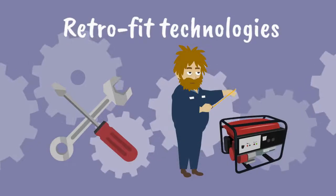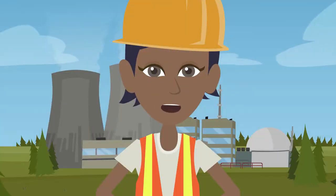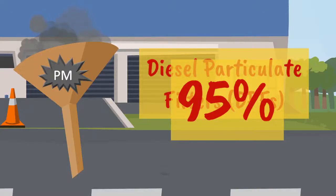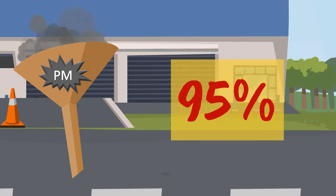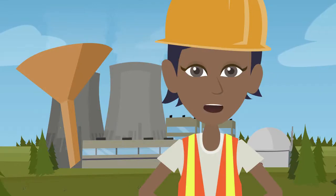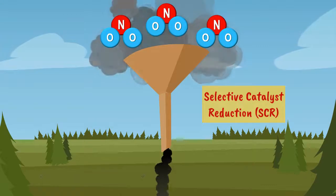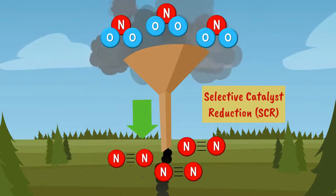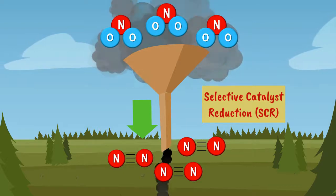Retrofit technologies are increasingly available for plant and construction machinery to reduce emissions. One commonly used technology is diesel particulate filters (DPFs), which, as the name implies, are filters that remove over 95% of fine particles from exhausts. It is important that technologies such as filters are maintained properly to ensure that engine performance is not compromised. New abatement technology called selective catalytic reduction (SCR) also significantly reduces emissions of nitrogen dioxide.